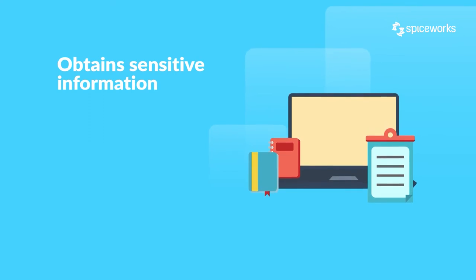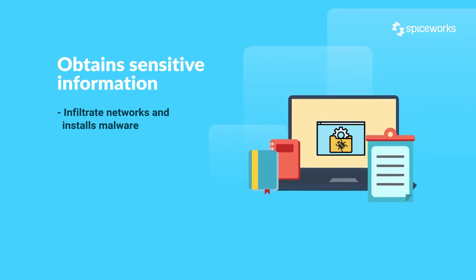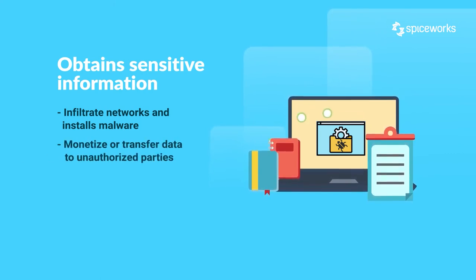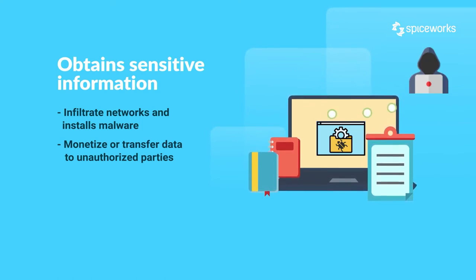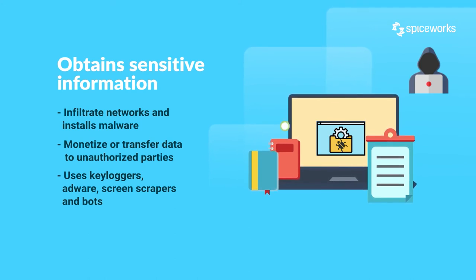Third, rootkits can infiltrate networks, systems, and devices, installing malware that searches for confidential and private data to monetize it or transfer it to unauthorized parties. Rootkits use several methods to acquire sensitive data, including keyloggers, adware, screen scrapers, backdoors, spyware, and bots.